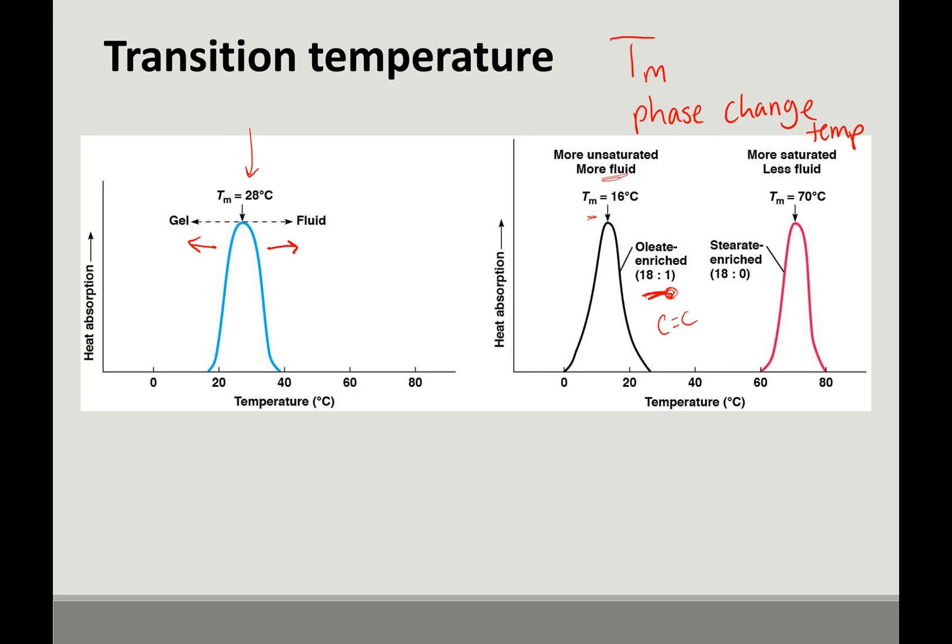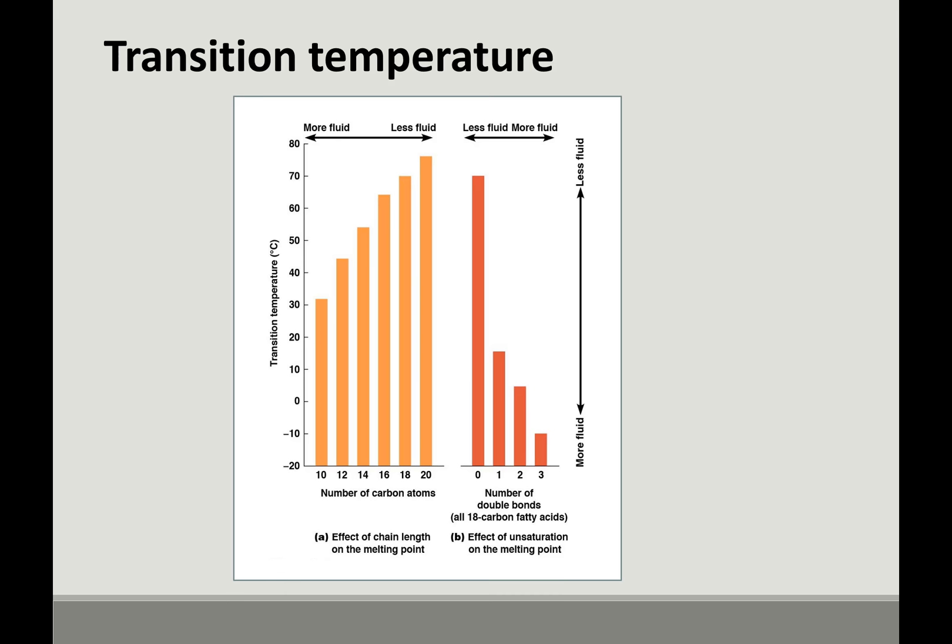Well, let's take a look at another figure from your book, which is really important for you to understand this concept. This is showing you the effect of chain length on the melting point or the transition temperature. And this is the effect of unsaturation. And what I want you to see is that as you increase the length of those fatty acids, it gets less fluid. Your membrane is less fluid because things are packing tighter together. Whereas shorter tails will leave a little bit more space and make it a little more fluid.